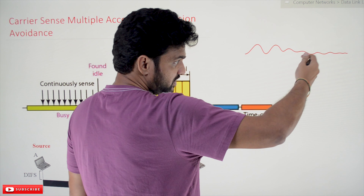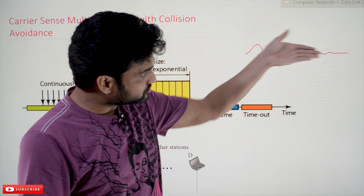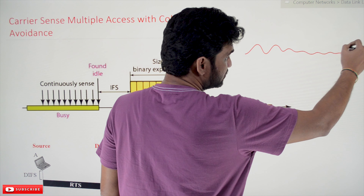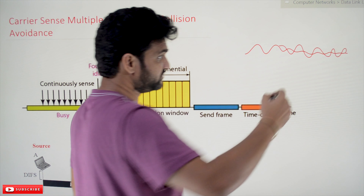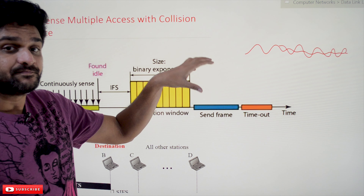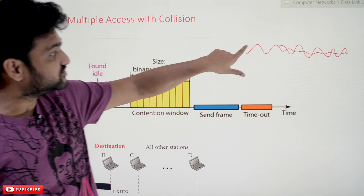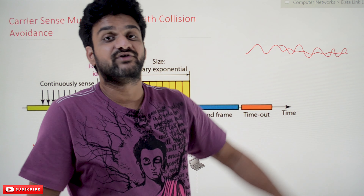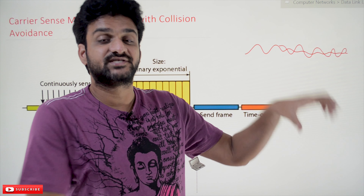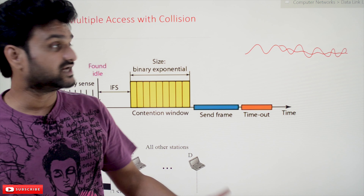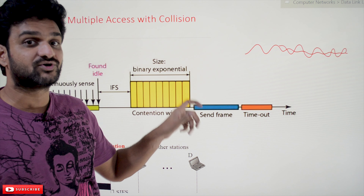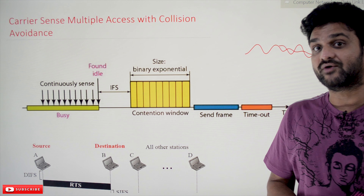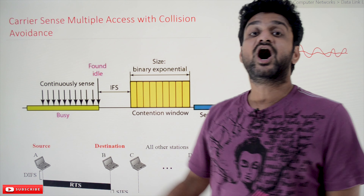In collision detection, after a collision occurs, the distorted signal has to come back with sufficient strength so that it can be received at the source. But due to attenuation, the signal strength keeps reducing in wireless networks — which does not happen in wired networks where signal strength is comparatively stronger. So this distorted signal may not reach the source, and the collision cannot be detected. Therefore, for wireless networks we use collision avoidance instead.